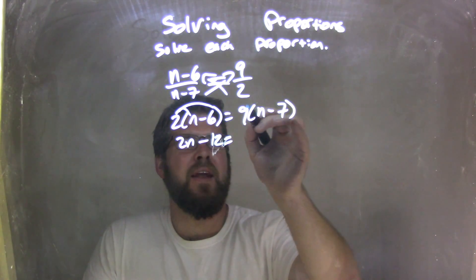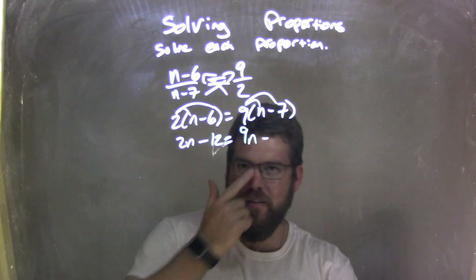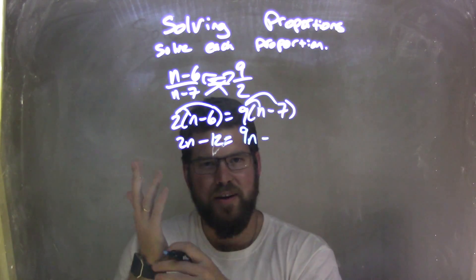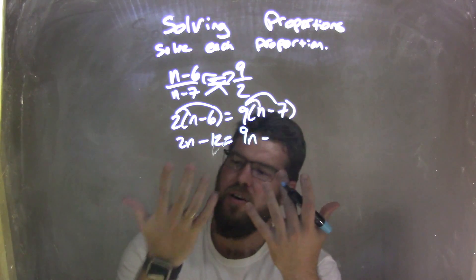Now I'll distribute the 9. 9 times n is 9n, and then 9 times 7. And again, whenever I see the 9s, I like seeing this trick, because I don't know if you're watching all my videos here. 9 times 7, let's go with my fingers.